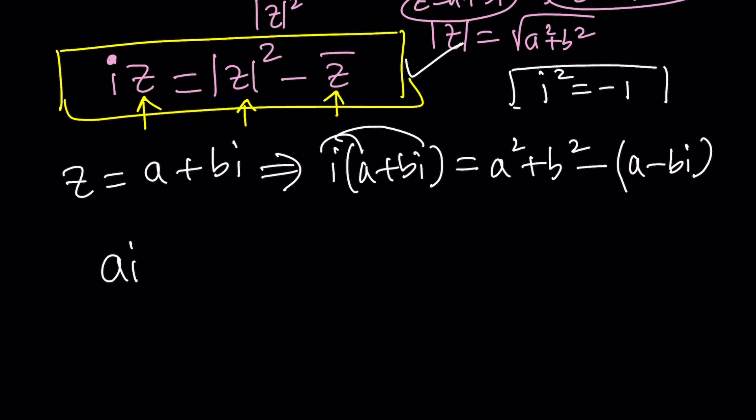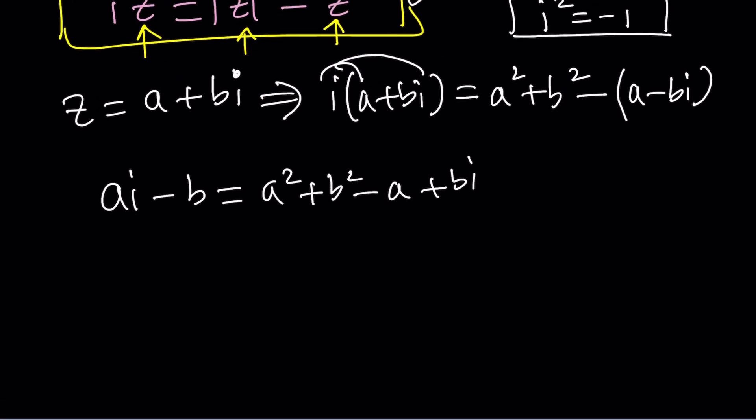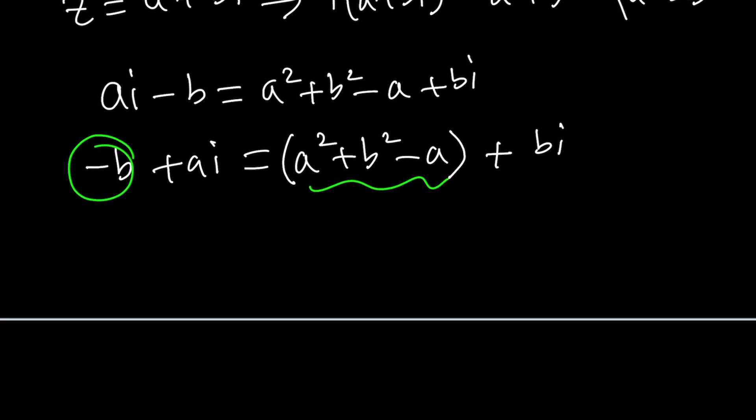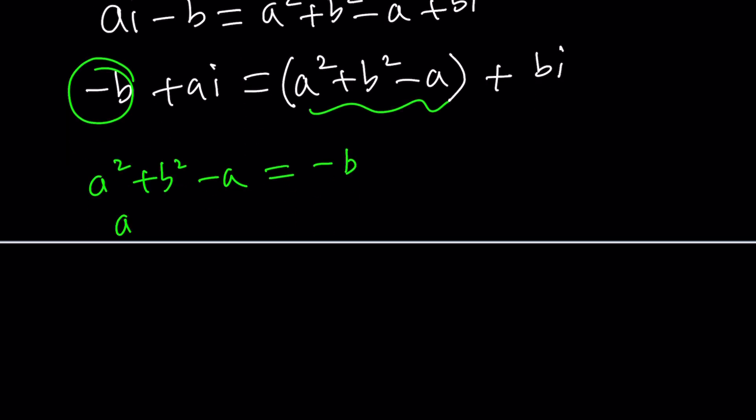I squared is actually defined to be negative one or I is defined to be the square root of negative one if you consider the square root the principal square root. Great so BI squared is going to be minus B then and this is going to give us when expanded A squared plus B squared minus A plus BI now we have the real parts and the imaginary parts so we should kind of make a comparison. How do you make a comparison? This is going to be the real part let me go ahead and separate it. Now we have this as the real part and that as the real part so we kind of set those together equal to each other I mean.